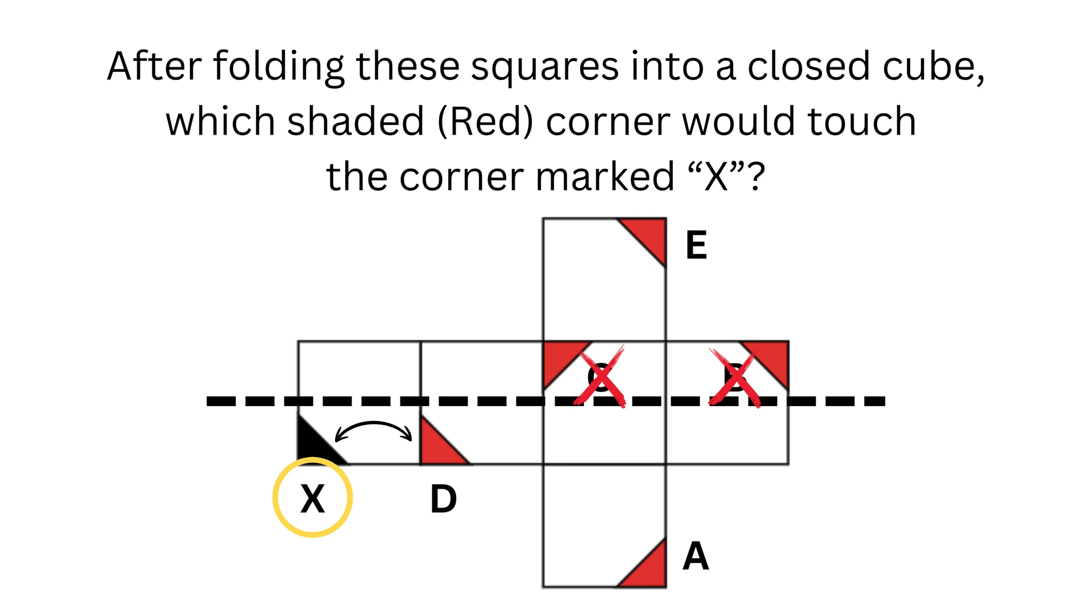As it's a cube, the sides can't be back to back, so option D can also be eliminated, leaving us with A or E.